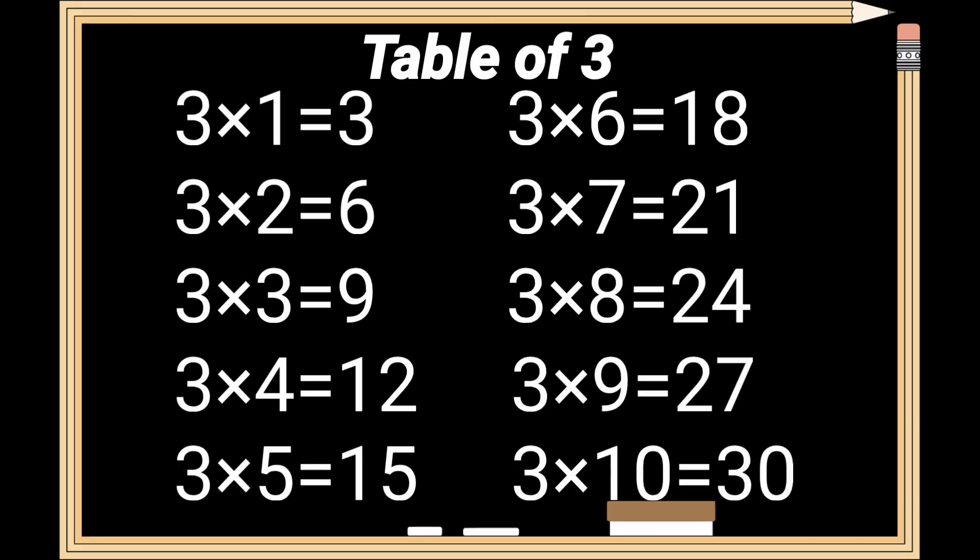Table of 3 review. 3 times 1 is 3. 3 times 2 is 6. 3 times 3 is 9. 3 times 4 is 12. 3 times 5 is 15. 3 times 6 is 18. 3 times 7 is 21. 3 times 8 is 24. 3 times 9 is 27. 3 times 10 is 30.